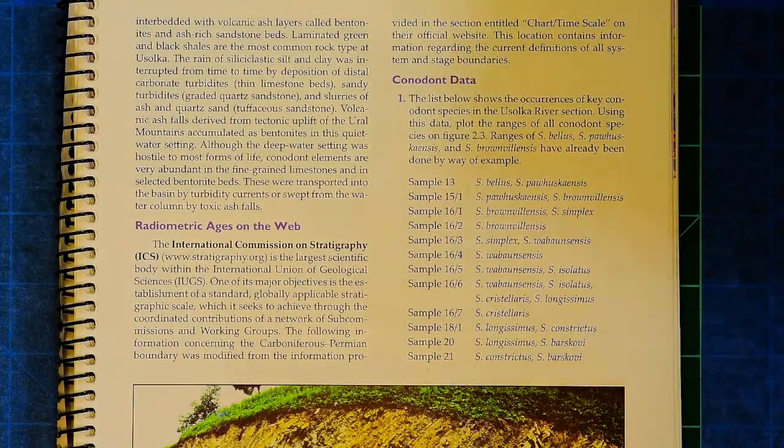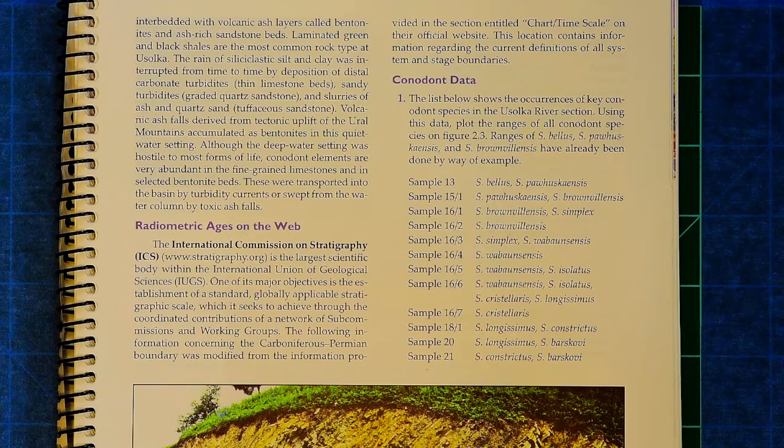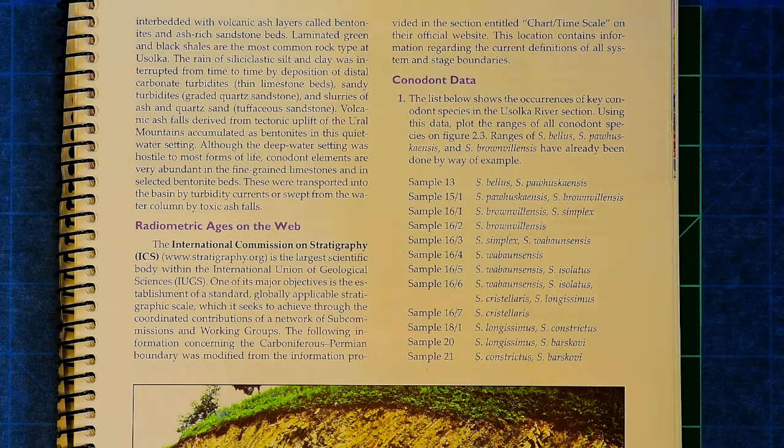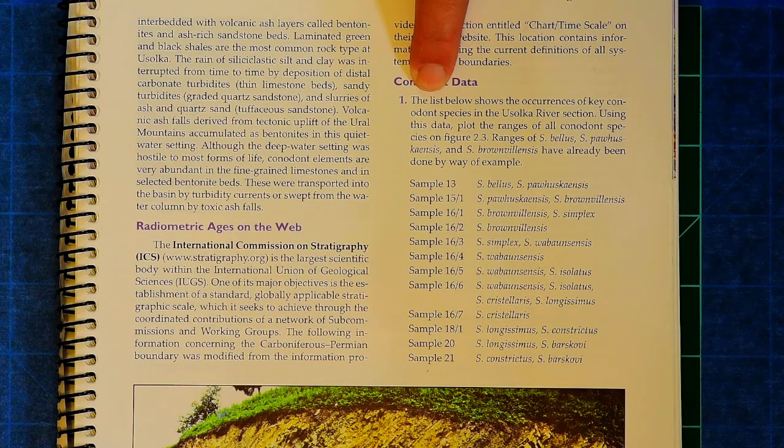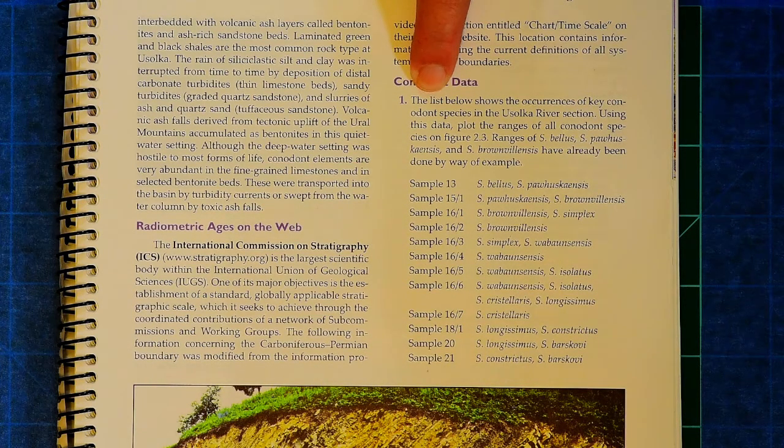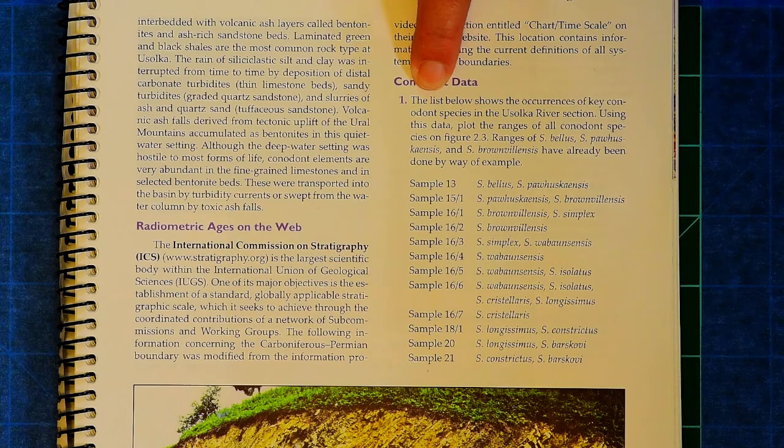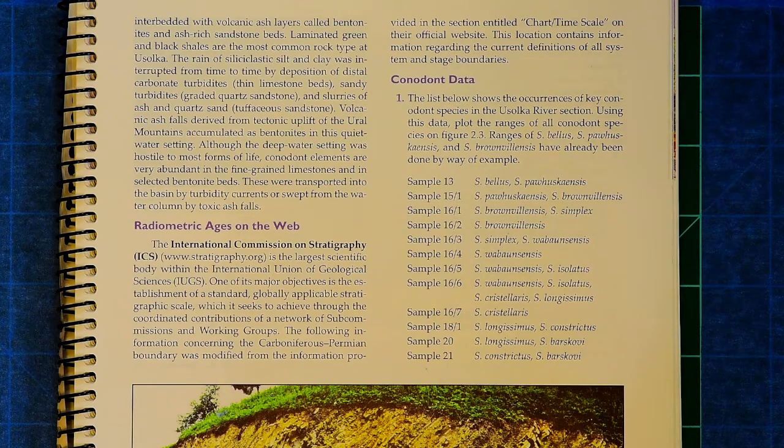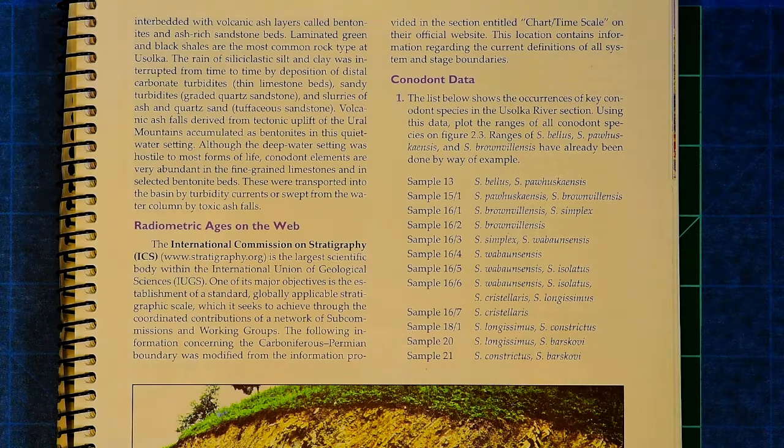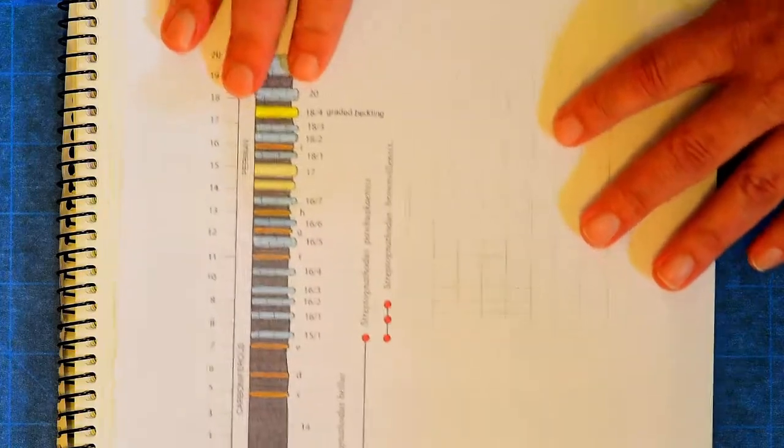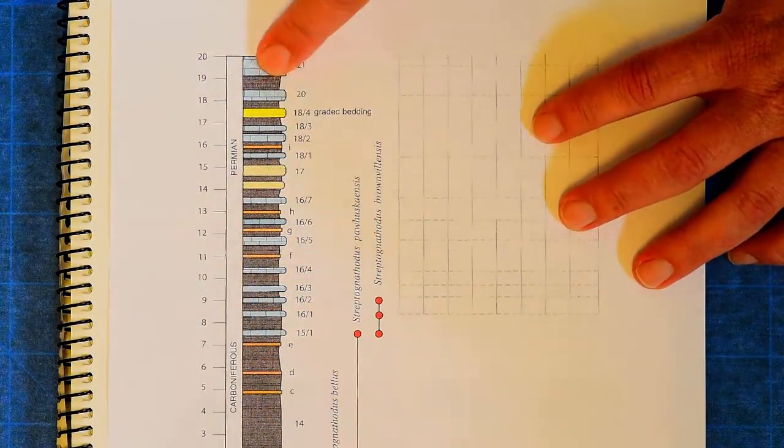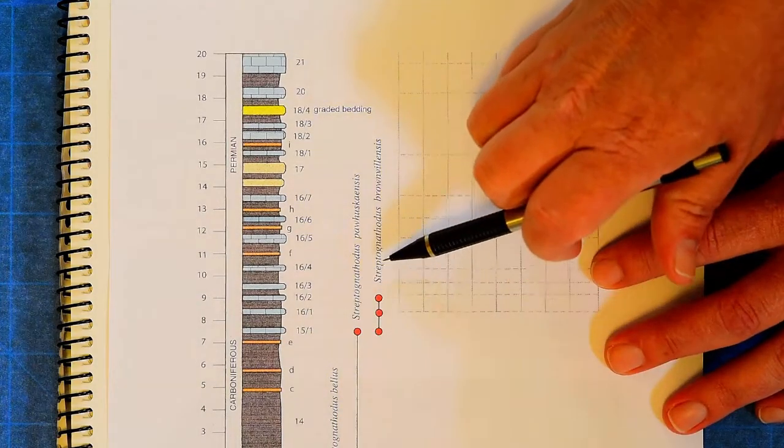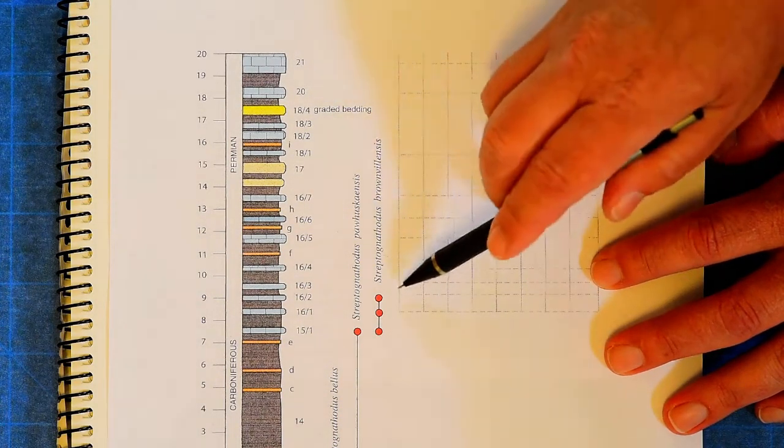And question number 18 says, question one, on page 21 of your lab manual, list the occurrence of conodont species. Plot the range zones of the different species on the graph provided with the stratigraphic section on the next page. So here's our stratigraphic section. And then we're going to have these conodont species. Three have already been plotted for you.